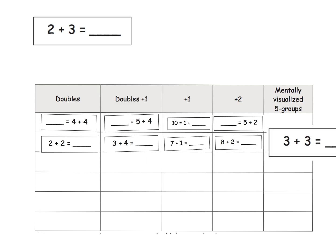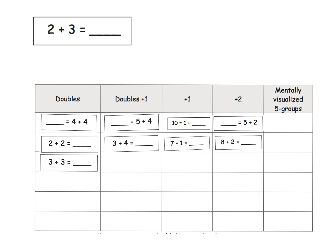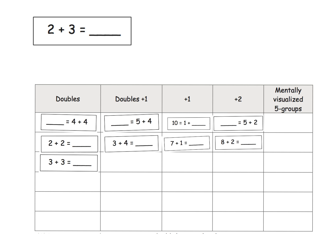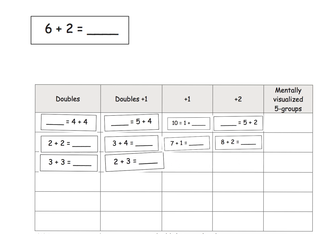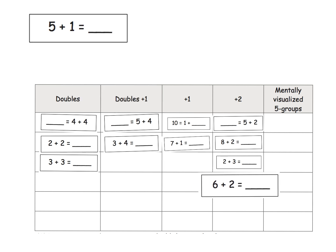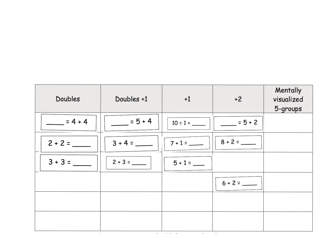'2 plus 2' — that's another double. '7 plus 1' — I'd probably put that here. '3 plus 3' — remember, students could put this in any box as long as it makes sense. For example, '2 plus 2' could have gone in the plus 2 section. '2 plus 3' could have gone as a plus 2 or as a near double. Here's '6 plus 2' and '5 plus 1' — I could have put this one as a near double, but let's move on.